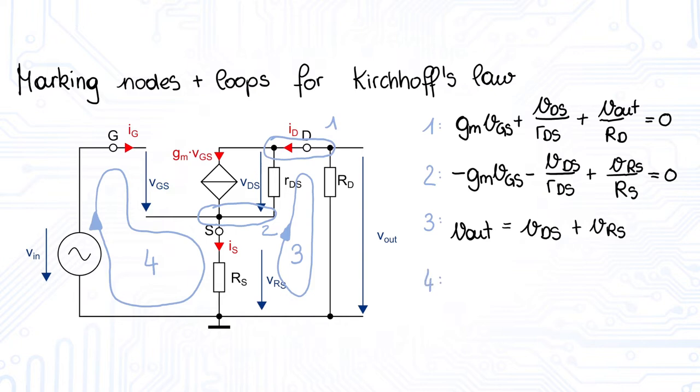Last but not least, the equation according to loop 4 is VIN is VGS plus VRS.